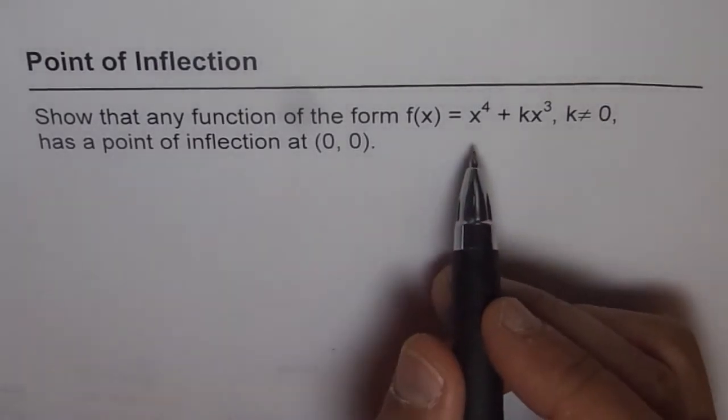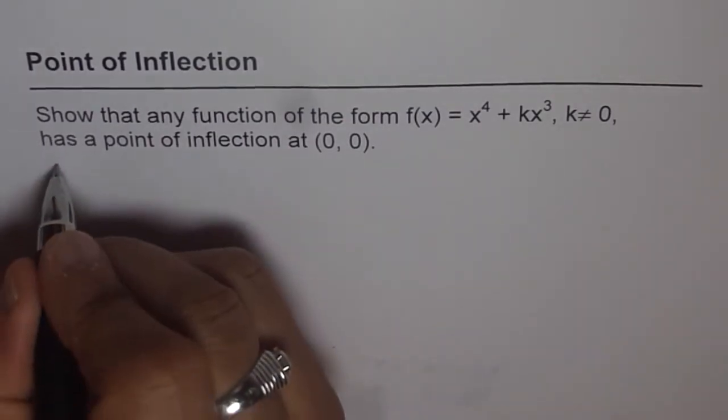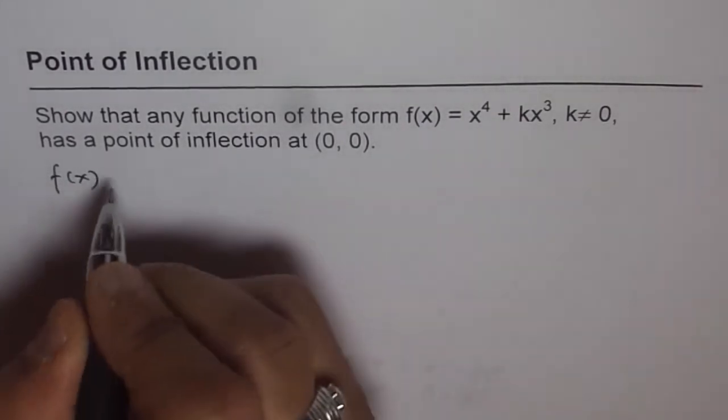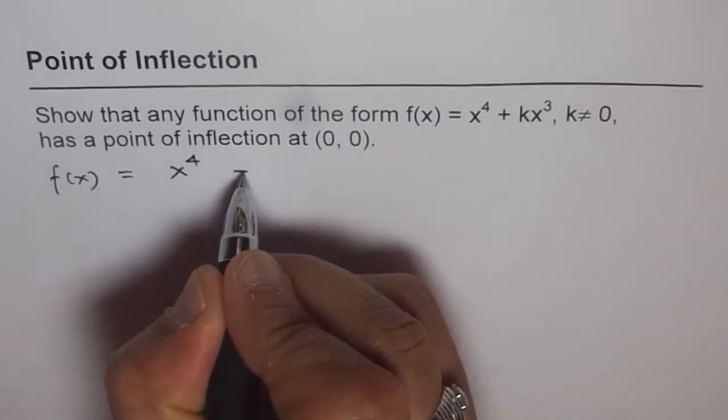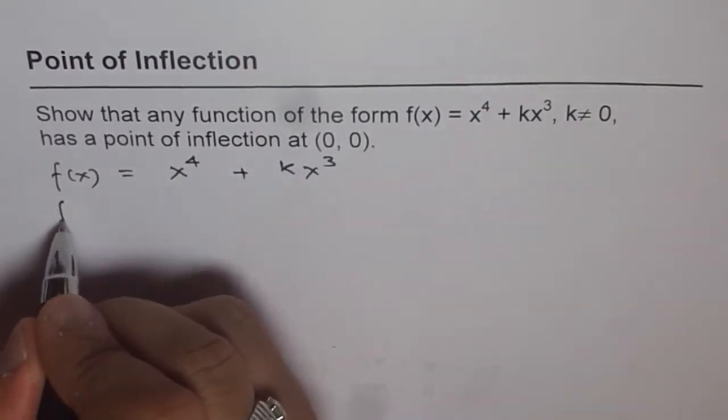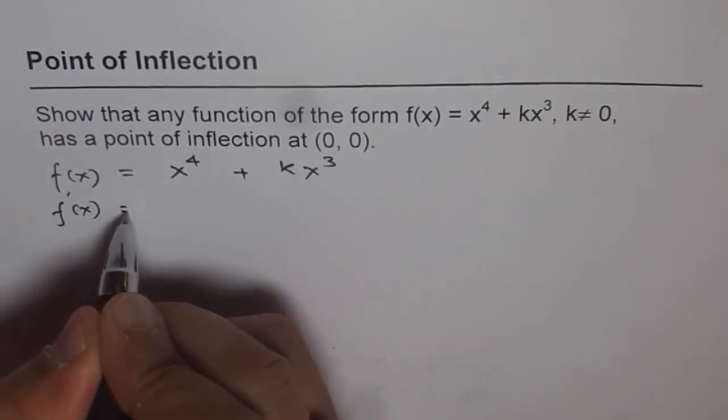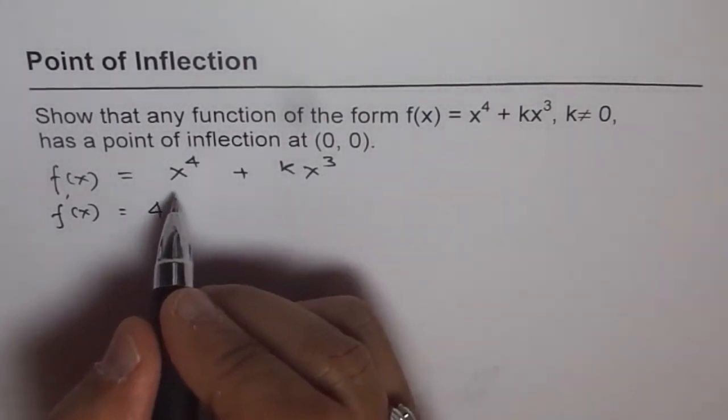Let's find the second derivative. Point of inflection is change in concavity, which we test with the help of second derivative. So we are given f(x), let's find first derivative first, and then the second derivative. It's a simple polynomial, we just do power rule.